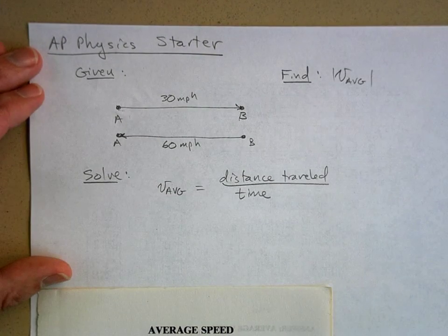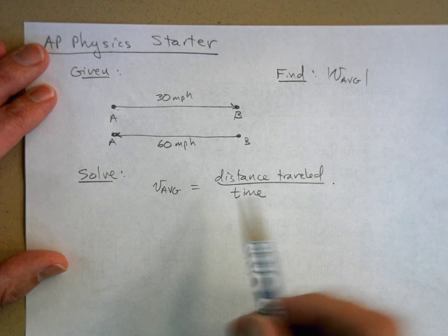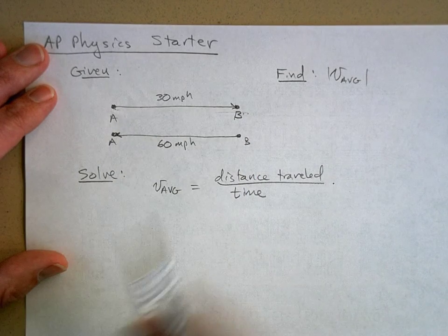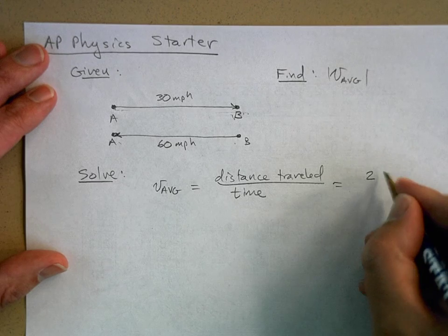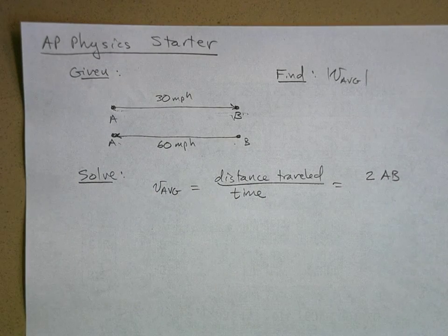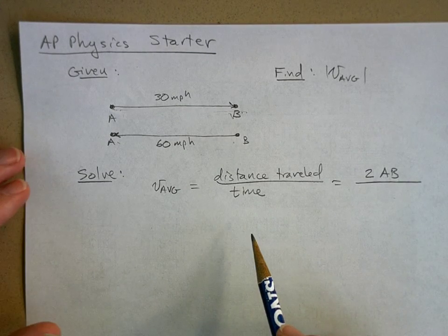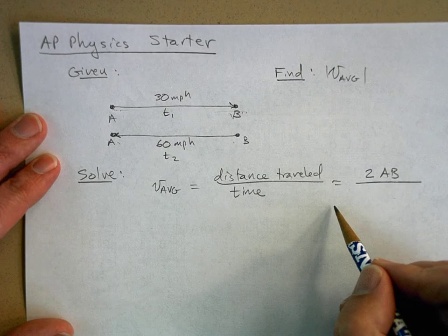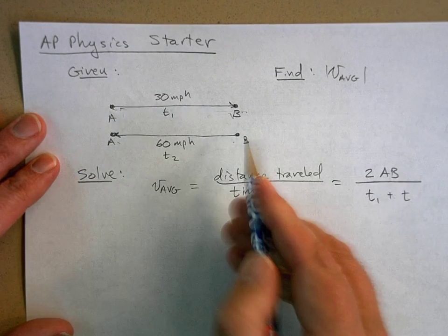So what is the distance traveled? I'm going to use AB as a length, so AB plus BA - the average distance traveled would be two times whatever AB is. The total time - I'm going to call this T1 and this T2. So the total time traveled is the time it takes to go from A to B plus the time it takes to go from B to A.